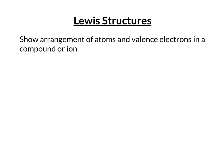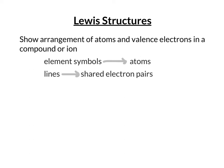In Lewis structures, you'll see element symbols which represent the atoms in the substance. You'll also see lines, and those lines represent shared electron pairs. An individual line is a single bond — one pair of shared electrons. A double line is a double bond — two pairs of shared electrons. A triple line is a triple bond — three pairs of electrons being shared.